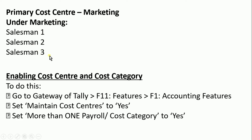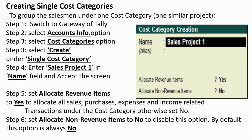To enable cost center and cost category, go to Gateway of Tally, press F11 Features, then Accounting Features F1, and set 'Maintain Cost Center' to Yes. Also set 'More than one Payroll or Cost Category' to Yes. After that, we can create a cost category.